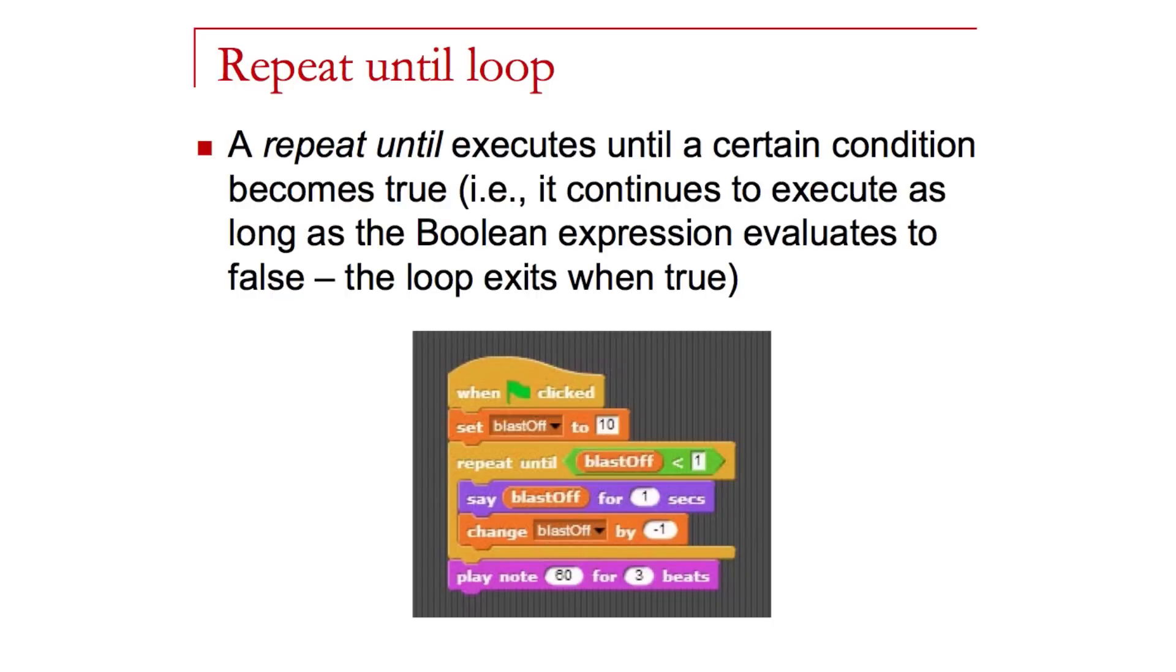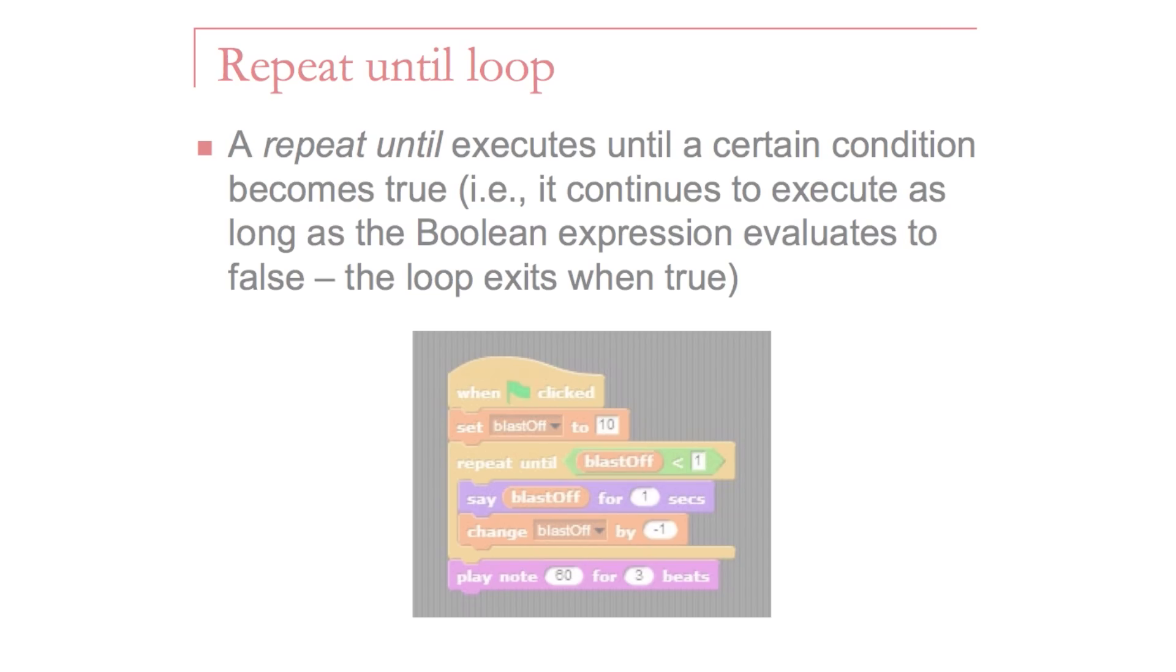If you notice, inside of the loop body, there's a change block, and it's reducing blast-off by 1 each time the loop executes. So we start at 10, we then say blast-off, and then we're reducing blast-off by 1. This is the same thing as saying blast-off equals blast-off minus 1. We're just decrementing or reducing blast-off by 1 each time.